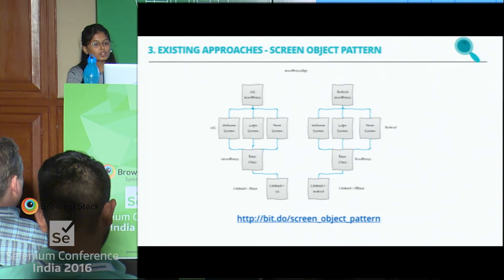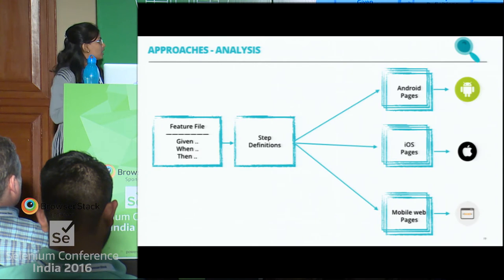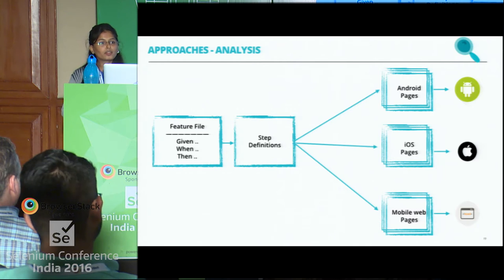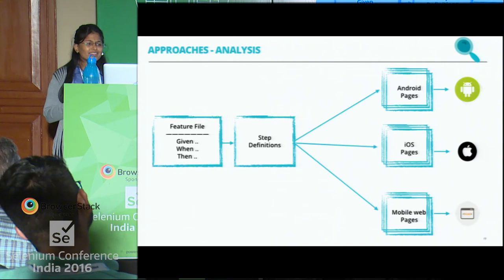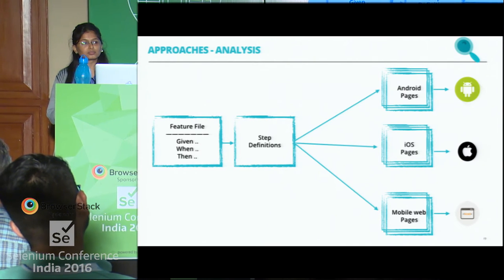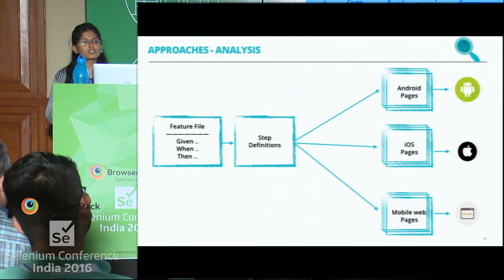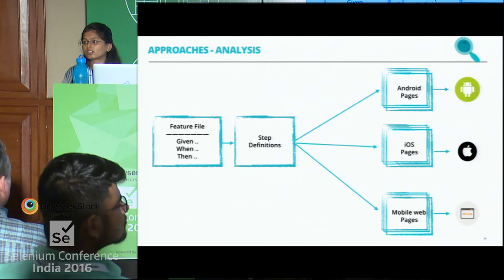Now, if we combine all three approaches and see how it looks for our three-platform scenario: we will have one feature file, one step definition, and three different pages for three different platforms. Do you see any problems with this, or are we good to go? — Maintainability.